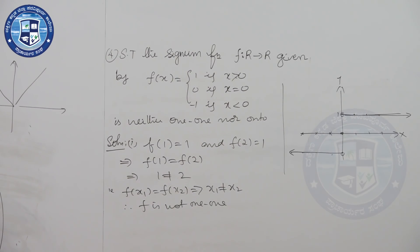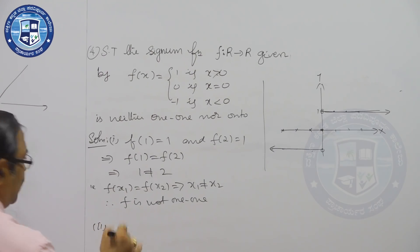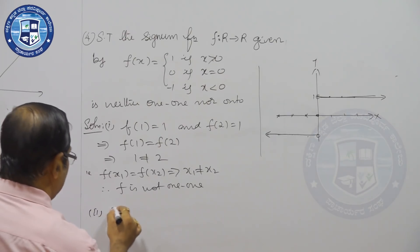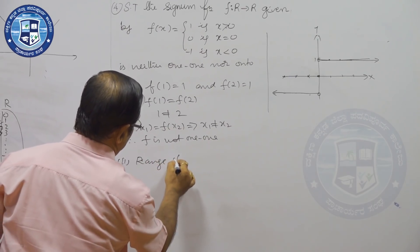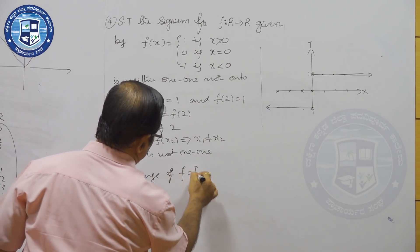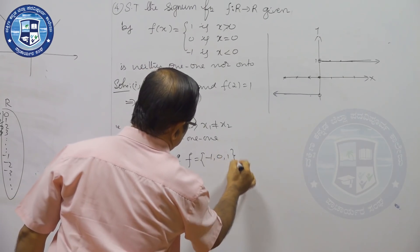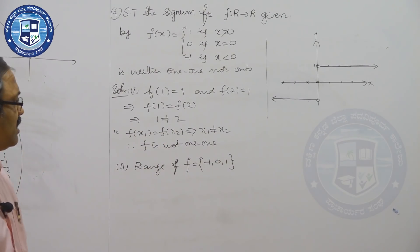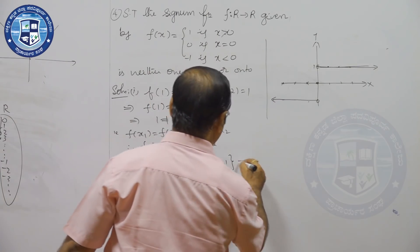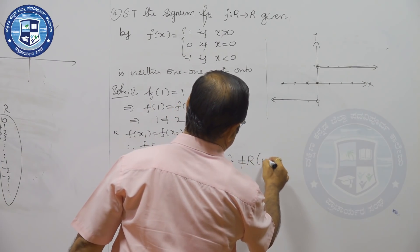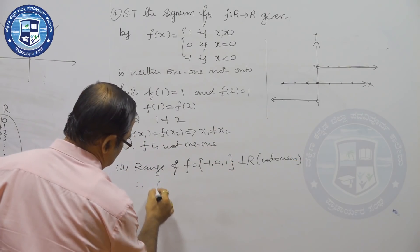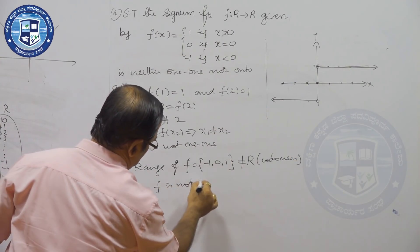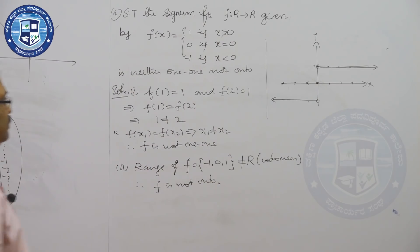For onto: the range of f is equal to {-1, 0, 1} — only three elements. This is not equal to R, which is the codomain. Therefore, f is not onto.